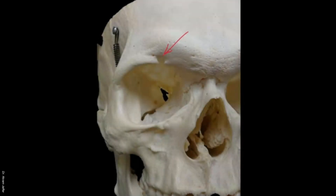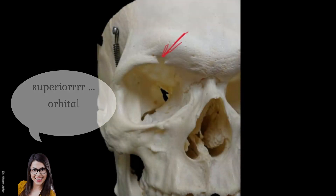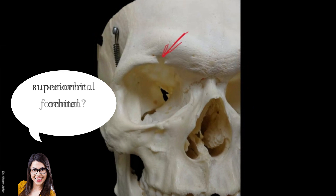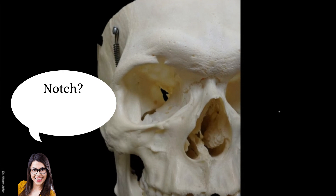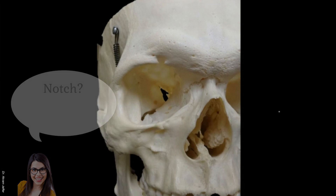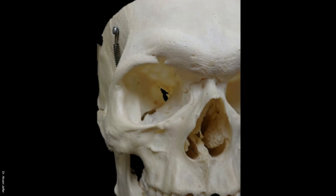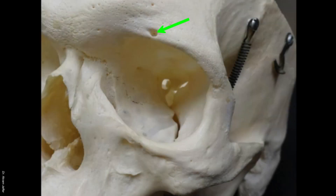Can you please identify the structure here? Supra-orbital — it's so clear that it's a notch, it is not completed here. You can check that on yourself to see whether you have a foramen or a notch by passing your thumb on the upper part of the orbit. You can check on both sides; sometimes we have a notch on one side and a foramen on the other side. Here, for example, it's a foramen.